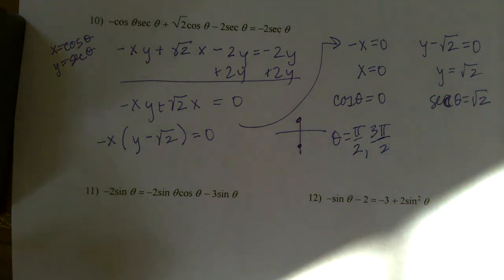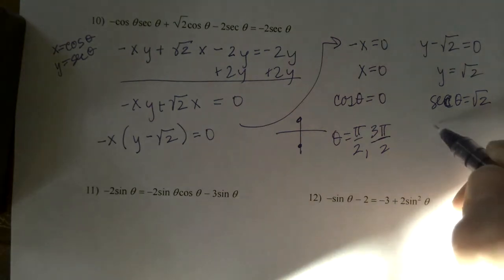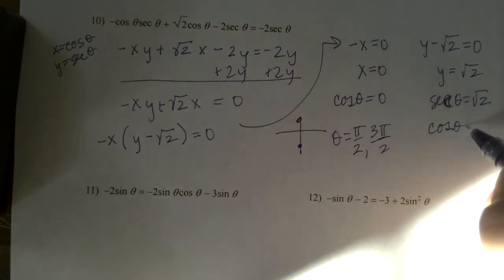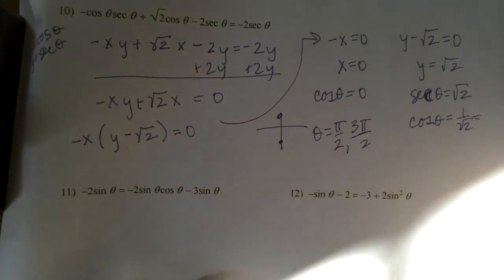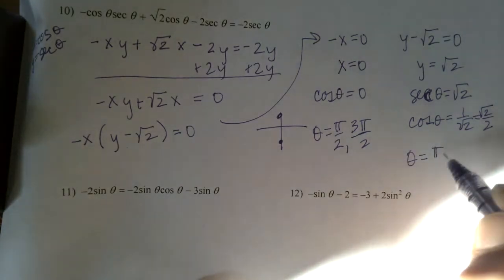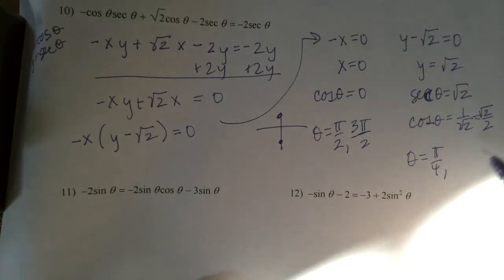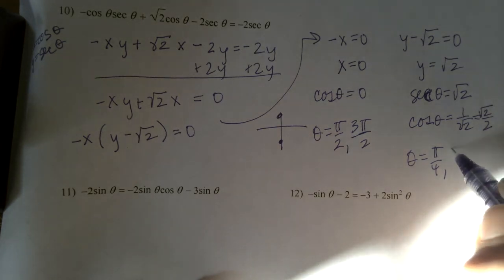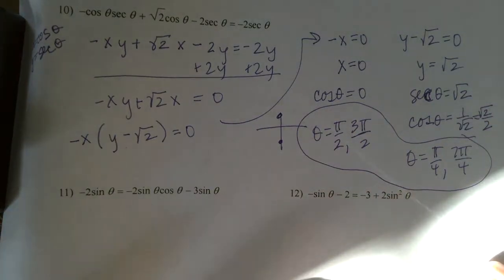And then the secant of theta is the square root of 2 when the cosine of theta is 1 over the square root of 2, or when I rationalize the denominator, the square root of 2 over 2. And that happens in the pi over 4 family. So theta is pi over 4 and also positive in the fourth quadrant. That would be 7 pi over 4. So my whole answer becomes that whole thing there.